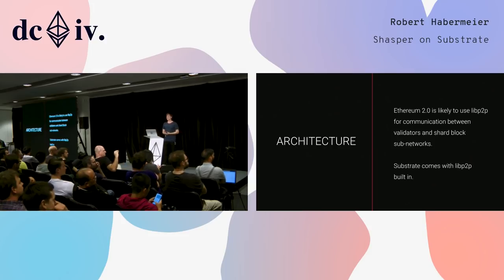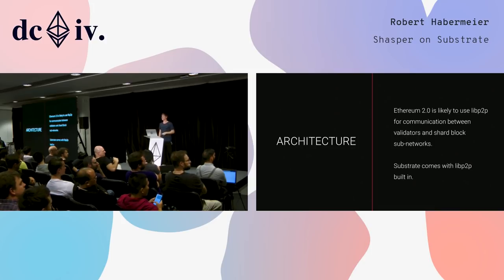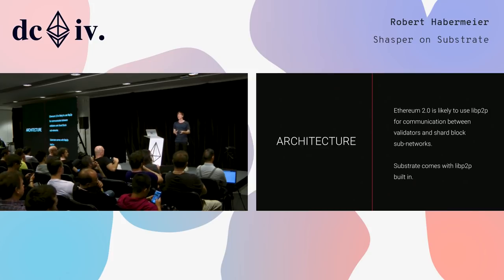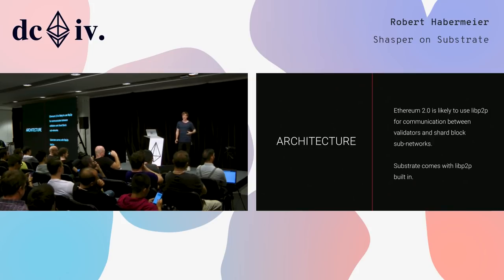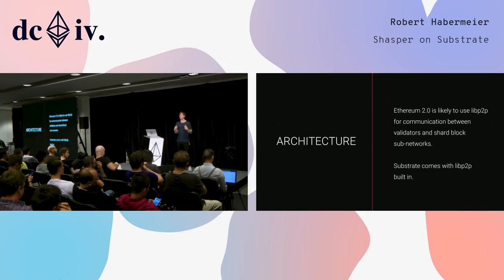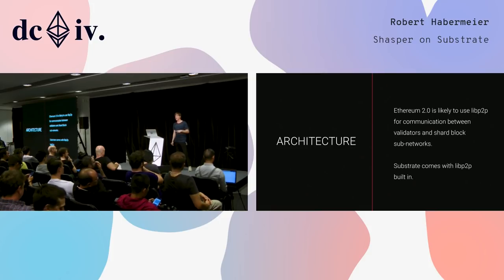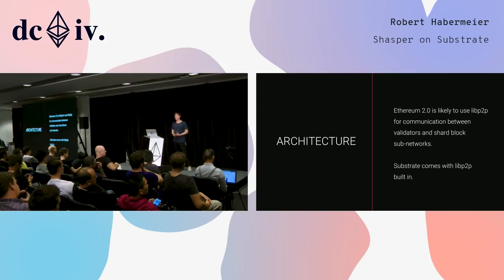At Parity, we did an implementation of LibP2P in Rust. LibP2P is a set of networking libraries first designed and described by Protocol Labs of IPFS and Filecoin, intended to be cross-platform and future-proof networking libraries. We've given that Rust implementation back to open source, and we're in the process of moving that over to Parity Ethereum as well, so that Parity Ethereum can use LibP2P as a backing network. We're also building Substrate out with LibP2P as first-class networking.